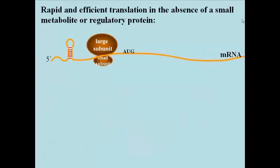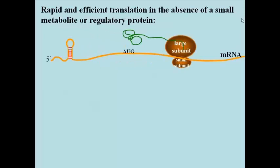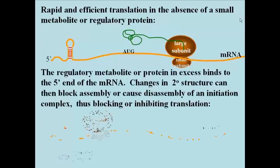In the absence of the small metabolic regulator or protein, the ribosome binding site acts efficiently to allow assembly of an initiation complex and the binding of the large ribosomal subunit. At this point, the ribosome quickly recognizes the initiation codon and the bacterial mRNA is efficiently translated.